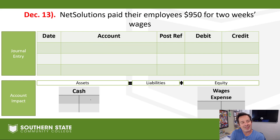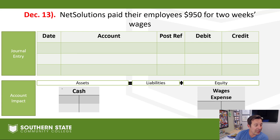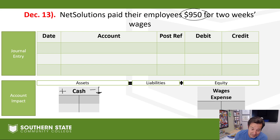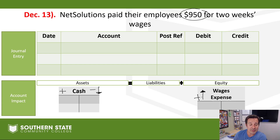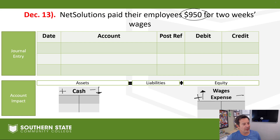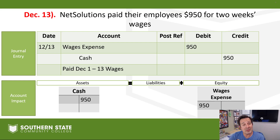December 13th — NetSolutions paid their employees $950 for two weeks of wages. We have a cash account in play that needs to go down to reflect that $950 payment, and wages expense needs to go up. Expenses always go up on the debit side. The entry is a debit to wages expense and a credit to the cash account — paid December 1 through 13 wages.